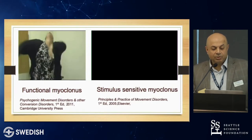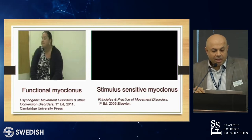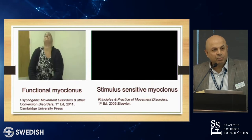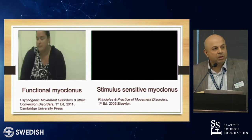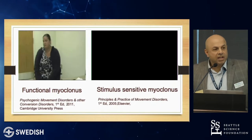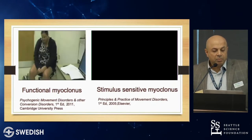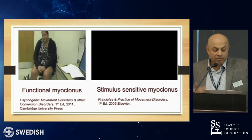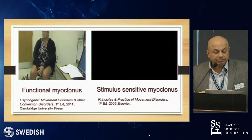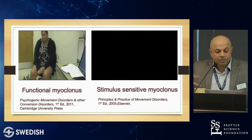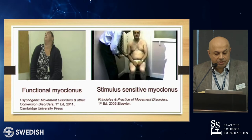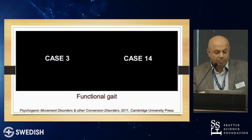Compared to that, a functional startle example — sometimes called the 'hallelujah pose' — is very dramatic. She's hyperextending her back, and it's slower than typical myoclonus. Startle is not that dramatic. The extension of the arm also varies; it's not very stereotypic. Those are two examples of functional myoclonus, and here's an example of functional gait.